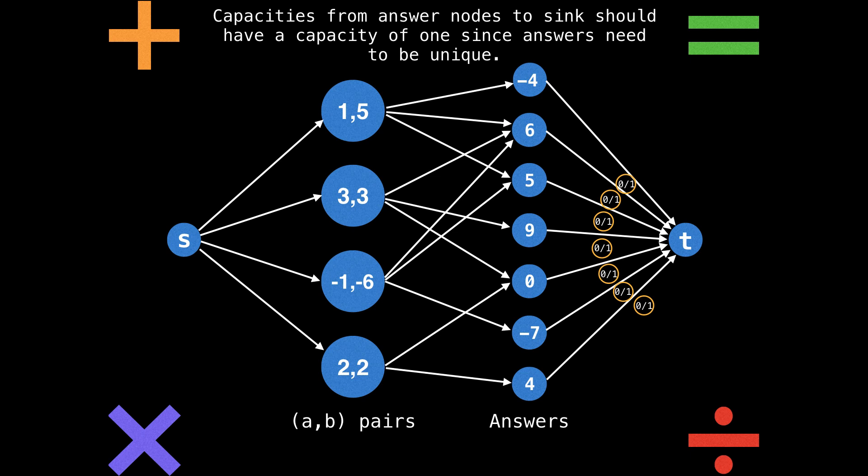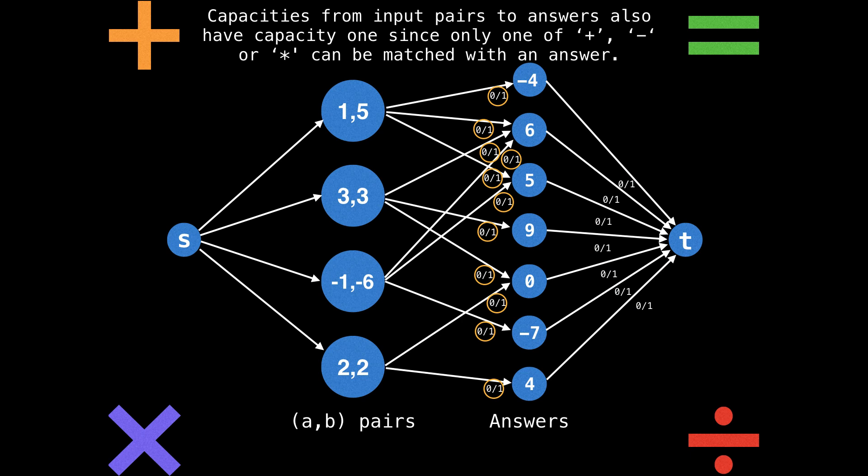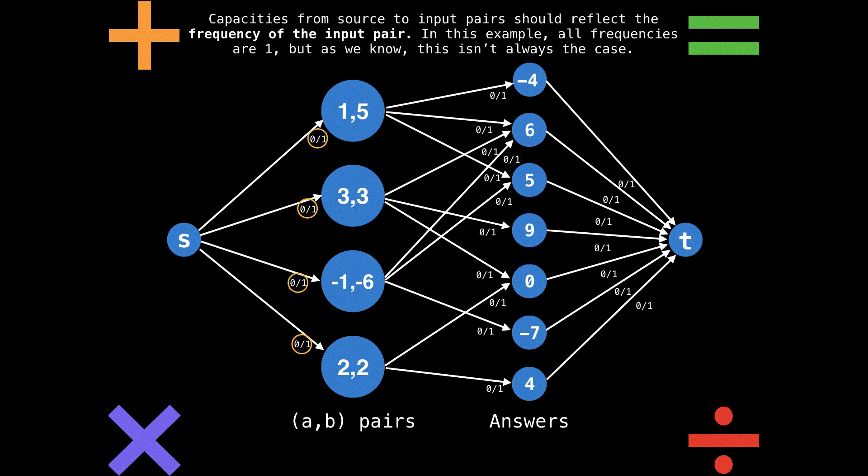Let's start on the right side. The capacities from the answer nodes to the sink should all have a capacity of one, since the answers need to be unique, and limiting the edge capacity to one ensures that. Capacities for the input pairs to answers should also have a capacity of one, since only one of plus, minus, or multiply should actually be matched to an answer. Capacities from the source to the input pairs should reflect the frequency of the input pair. In this example, all frequencies are one, but as we know, that's not always the case.